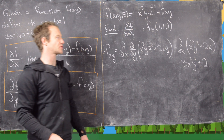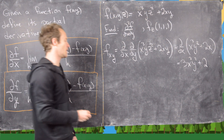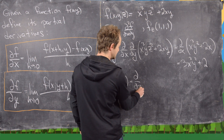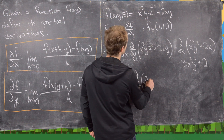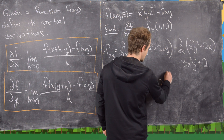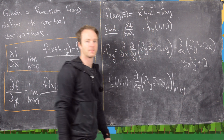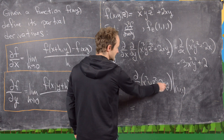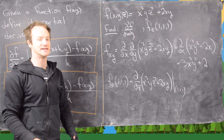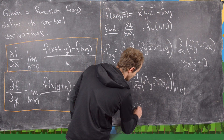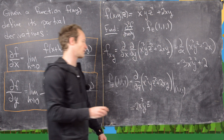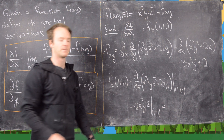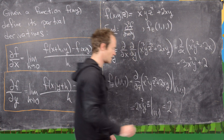Next we want ∂f/∂z evaluated at the point (1, 1, 1). Treating x and y as constants and z as the variable, the 2xy term is constant so its derivative is 0. The derivative of x cubed y z squared with respect to z is 2x cubed y z. Evaluating at x=1, y=1, z=1 gives 2 times 1 times 1 times 1, which equals 2.